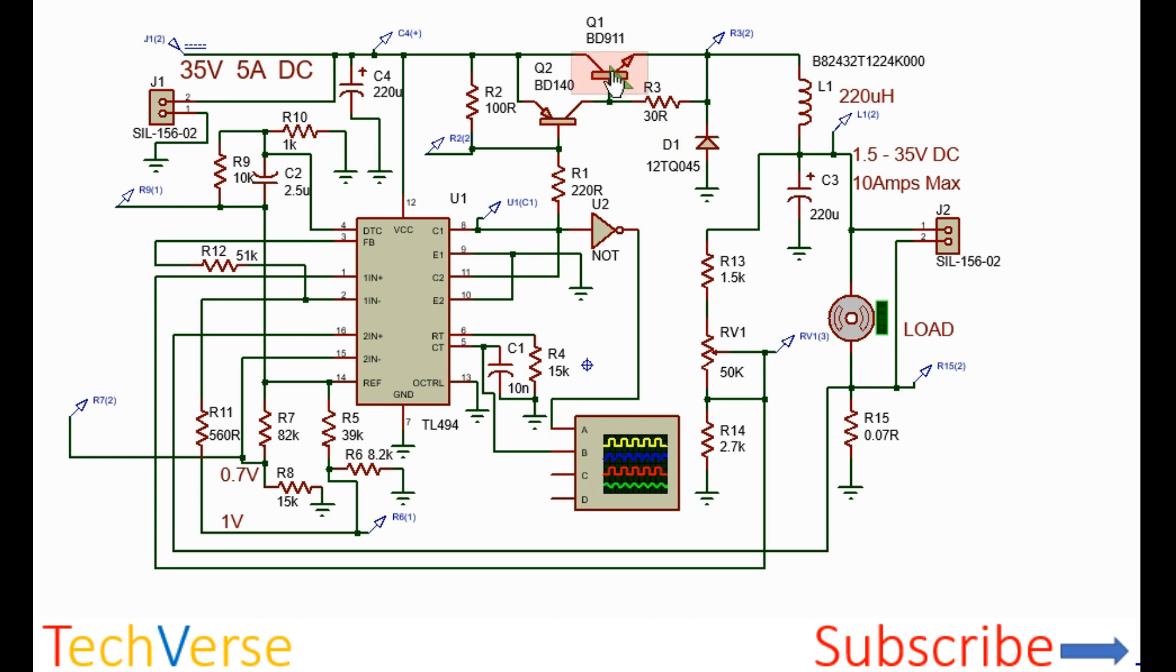This is the transistor. It's an NPN BD911. Ensure the transistor you use can easily handle 7 amperes or more, preferably 10 amperes. This is the BD140 PNP transistor. It's used to drive the output transistor. Ensure that the PNP transistor has a gain of at least 15 and can output at least 1 ampere.